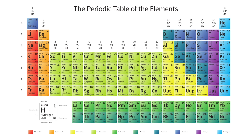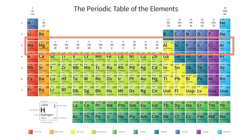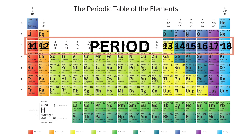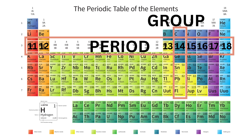It's divided into rows and columns. The rows are known as periods. The atomic number increases as you move from left to right across a period. The columns are called groups, and elements in the same group have similar properties.